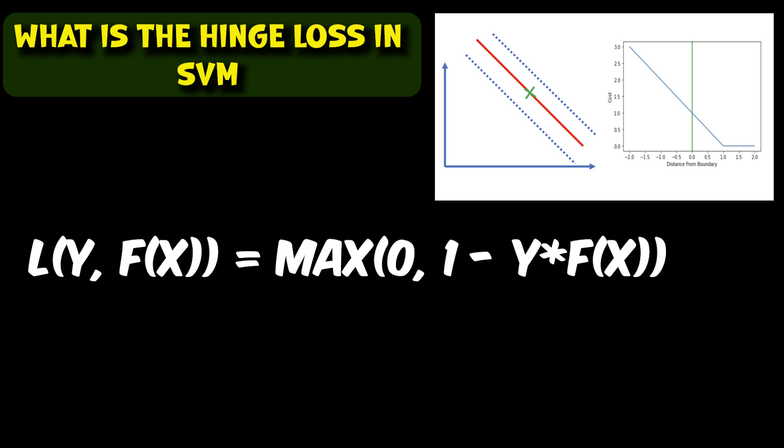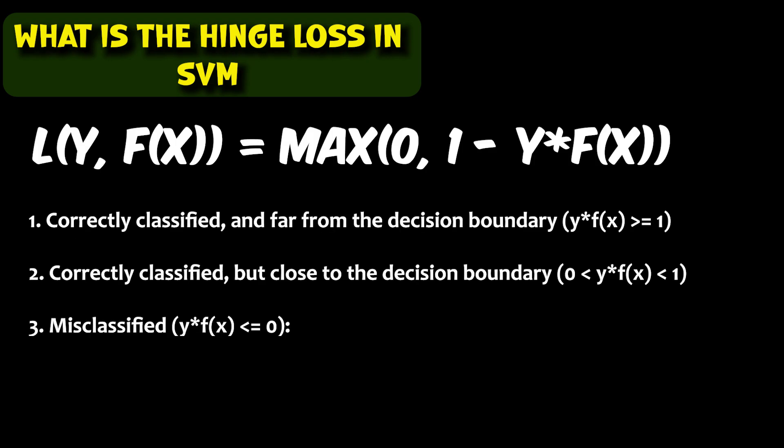The hinge loss function can have three different scenarios. The first scenario is when y times f(x) is much greater than 1. In this case, the loss is 0 as the point is on the correct side of the margin. The hinge loss function encourages a model that correctly classifies points and maintains a very good margin.